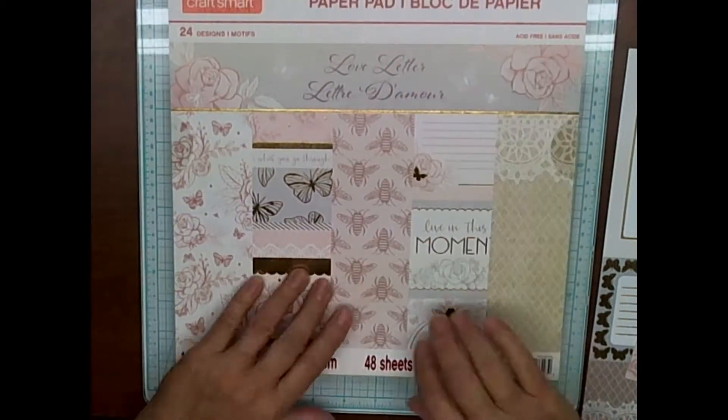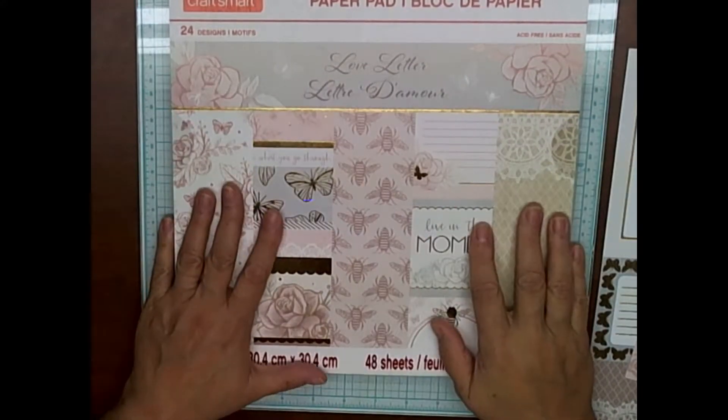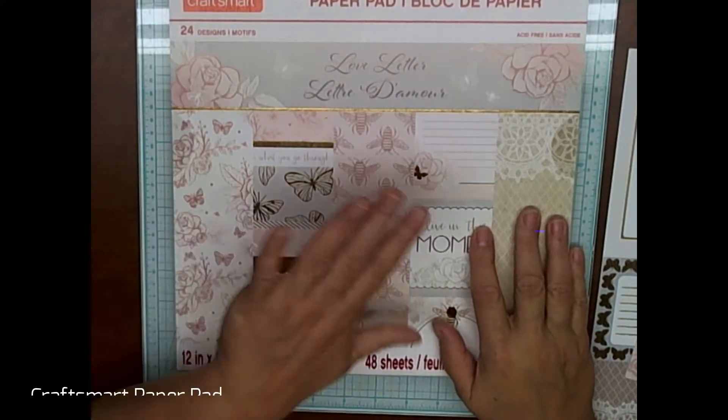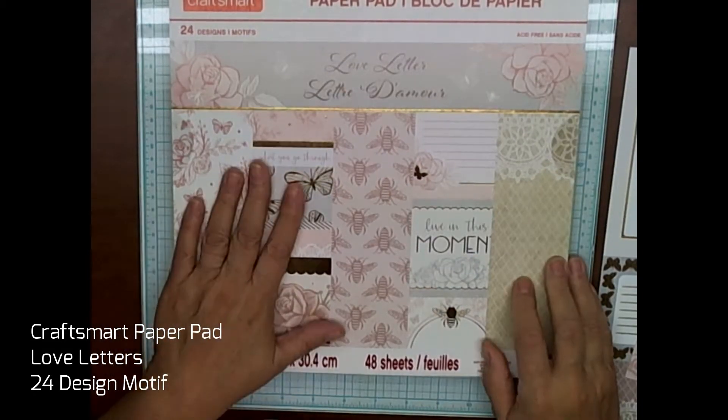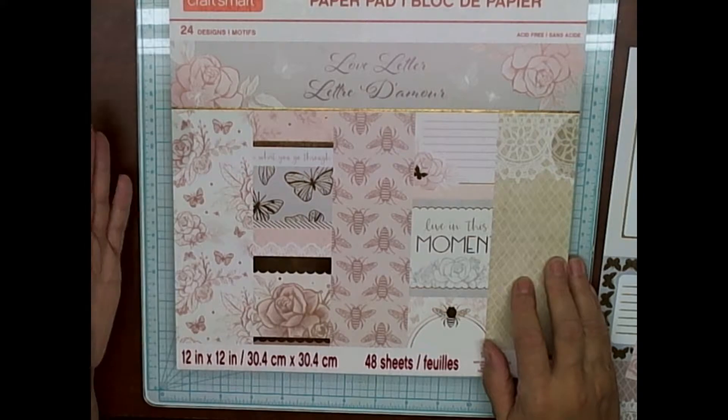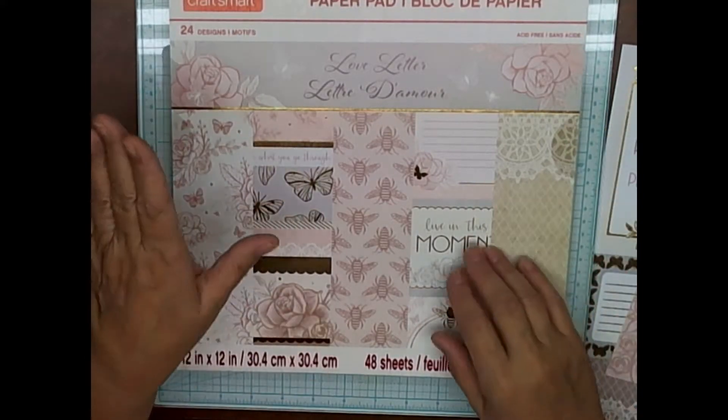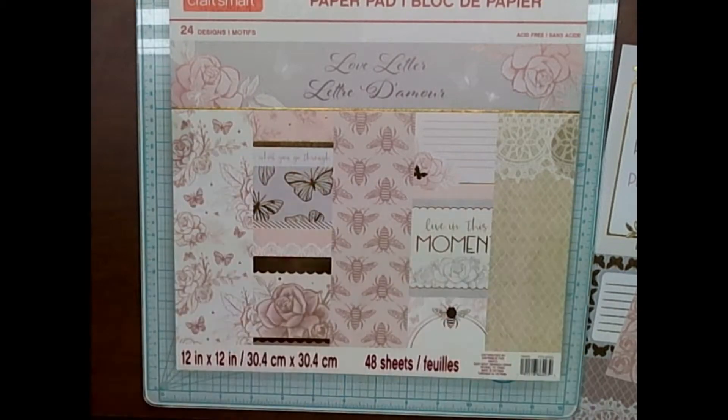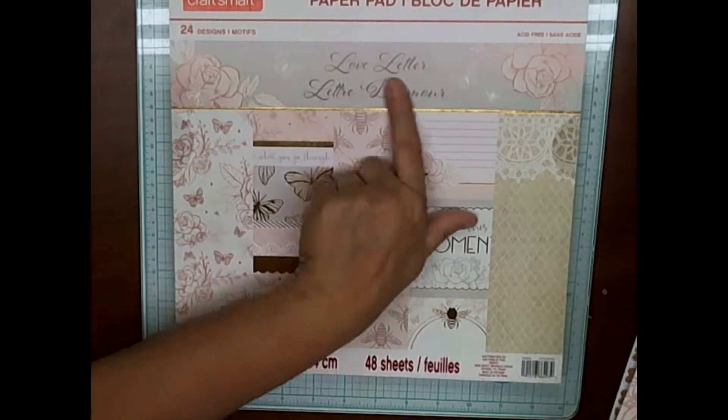We all get these great big paper pads. This one here is from Michaels in their value package. They're $12 Canadian and sometimes we have pieces in there where we're not quite sure what to do with it. But I'm going to show you a simple way if you have to make a spur-of-the-moment card or a long-term card. It doesn't matter because they're so fun to make. All you do is you go through your package. This one here is Love Letters.